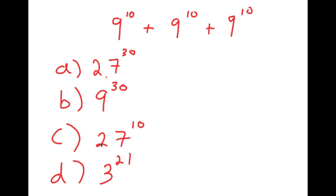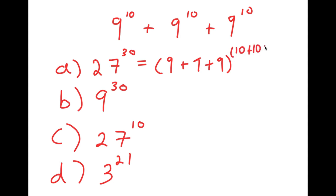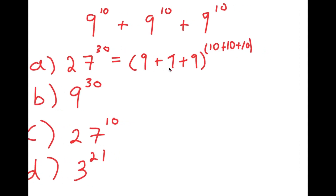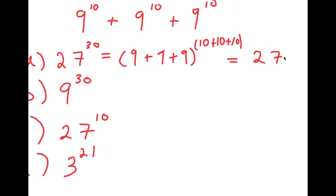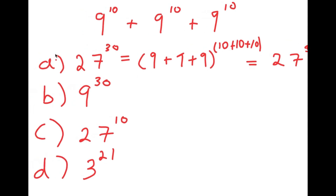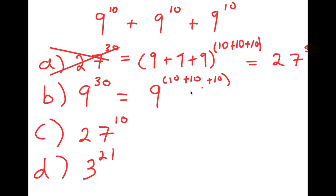To start out, let's go through all the answer choices and see if they're right or not. For A, 27 to the power of 30 was likely gotten by adding all the bases and adding all the exponents — 9 plus 9 plus 9 to the power of 10 plus 10 plus 10 equals 27 to the power of 30. This is wrong because that is not the proper way to add exponents. For B, 9 to the power of 30 was gotten by keeping the base the same and adding the exponents, which is also wrong.